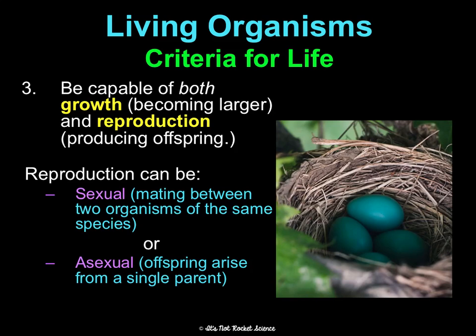In humans, sexual reproduction occurs through meiosis — you make an egg or sperm, they reunite to form a zygote, which grows into an embryo, fetus, and then a baby. Your body also does asexual reproduction through mitosis — hair cells, nail cells, muscle cells replicating on their own — so technically you have both processes going on.